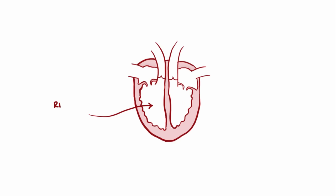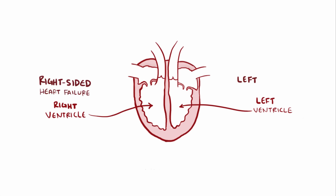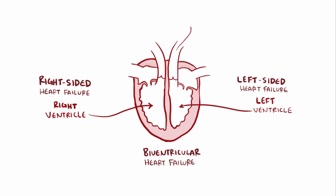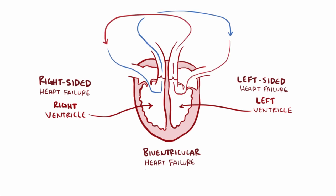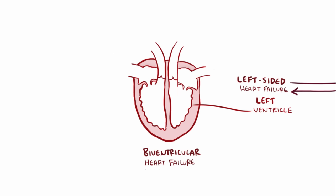Heart failure can affect the right ventricle, the left ventricle, or both. Someone might have right-sided, left-sided, or biventricular heart failure, each of which can involve systolic or diastolic failure. Since the ventricles work in series, if less blood exits either ventricle it affects the other — left-sided could cause right-sided and vice versa. These terms really refer to the primary problem, essentially which one came first.